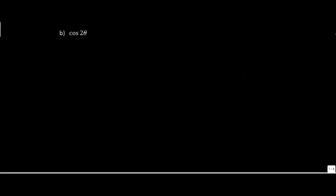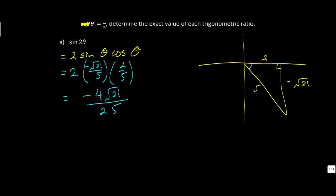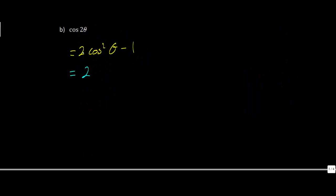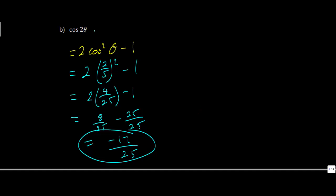Now for cosine of 2θ, I'll use the identity that cosine 2θ equals 2 cosine squared θ minus 1. Referencing our triangle, cosine of theta is 2 over 5. Substituting in: we have 2 times (2/5) squared minus 1. Order of operations: 2 squared is 4, 5 squared is 25, multiplied by 2 gives 8 over 25. Subtracting 1, we need a common denominator of 25, giving us 8 over 25 minus 25 over 25, which equals negative 17 over 25.